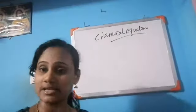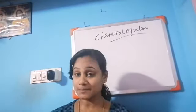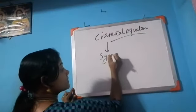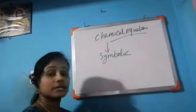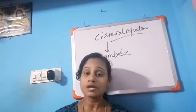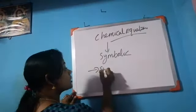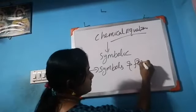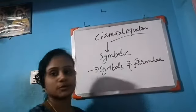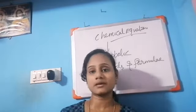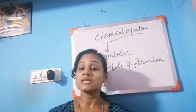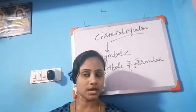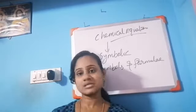What is a chemical equation? A chemical equation is a symbolic representation of a chemical reaction, by using symbols and formula of the substances.